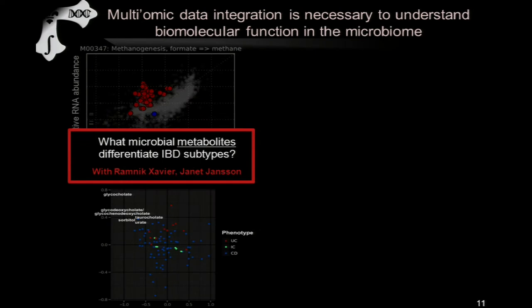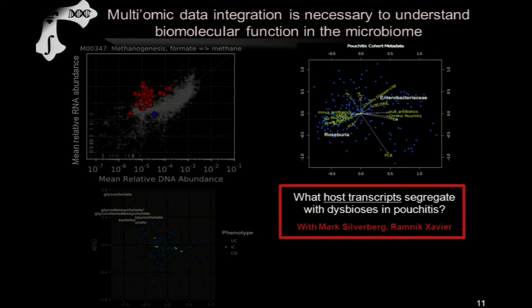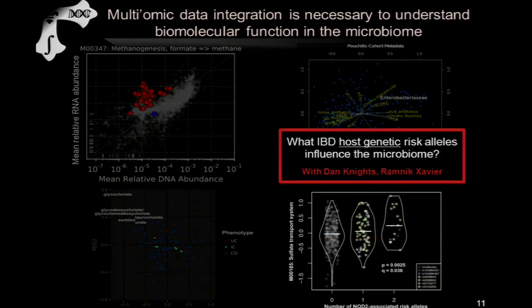We heard a lot earlier about metabolic profiling differentiating subtypes within IBD — that work is with Janet and Ramnik Xavier at MGH and the Broad. We've also had several projects with Ramnik looking at the host's functional contribution, often specifically in IBD. We have examples where we've been looking at the interaction of host transcription with microbial presence, absence, and transcriptional activity in pouchitis-associated inflammation. And we heard from Ruth this morning about the longer-term post-genetic contribution to disease risk and composition of the microbiome.